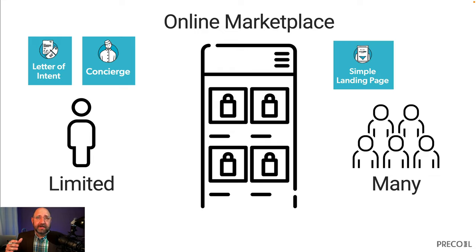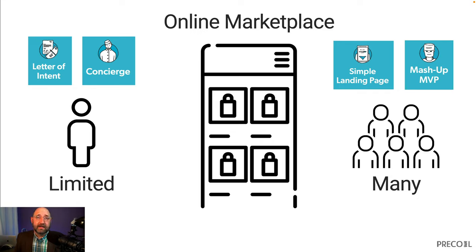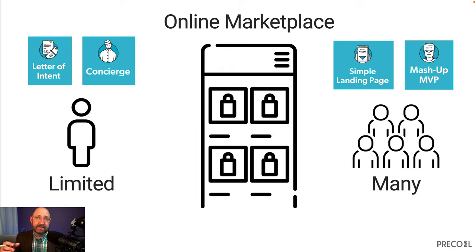On the other side, when tailoring the online experience to the many — for an online training or learning marketplace — you might have a simple landing page with a call to action to see if people are seeking advice, what kind of advice they're looking for, and what things they're trying to learn. Another thing you might end up doing after that is a mashup. A mashup is really just taking parts of existing online services and wiring them together into a platform, rather than building from scratch — because building from scratch could be really expensive. If you're wrong, you may not be able to recover from it.